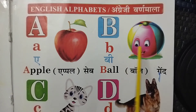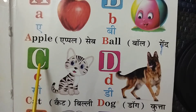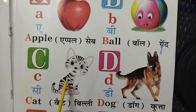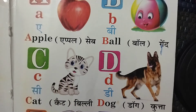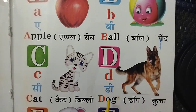Ball means game. C, C for Cat. Cat means will. D, D for Dog. Dog means kutta.